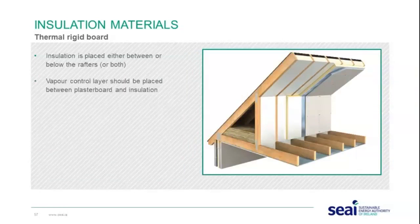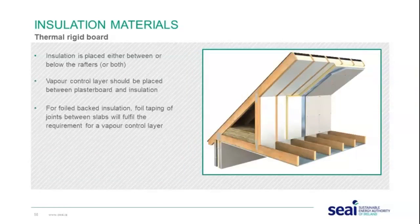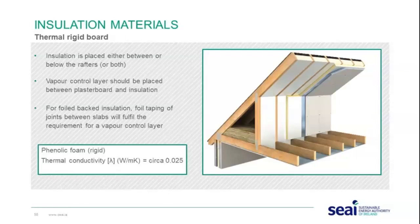For thermal rigid board, insulation is placed either between or below the rafters, or both. A vapour control layer should be placed between the plasterboard and the insulation. For foil-backed insulation, foil taping of the joints between the slabs fulfils the vapour control layer requirement. The thermal conductivity is around 0.020–0.025, though this varies depending on the actual material used.